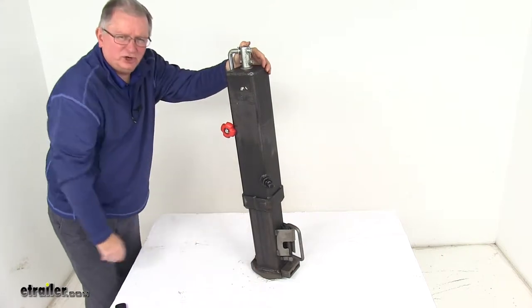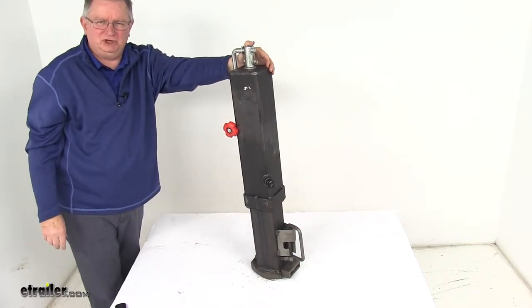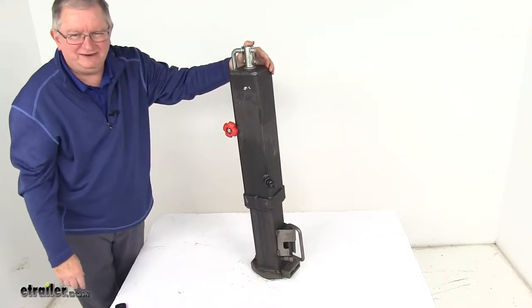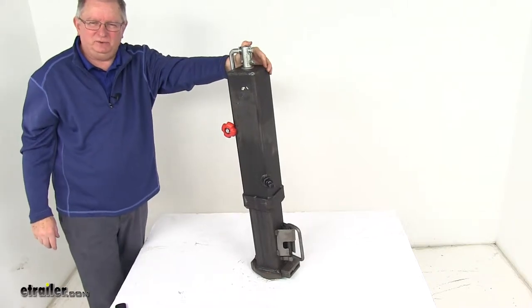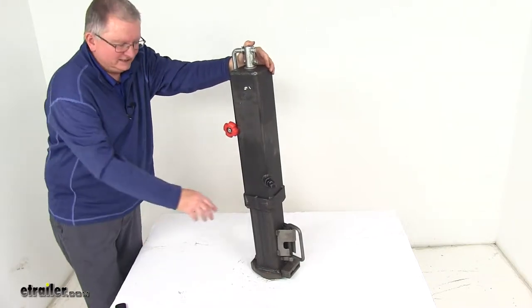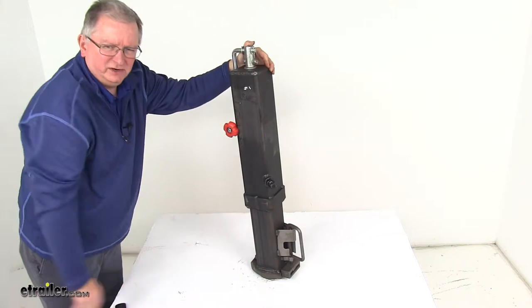When you hook up, it has a curved internal ball clamp that will secure the hitch ball and provide a nice strong tight fit. The tight ball fit will help to reduce jarring and rattling. It uses a spring-loaded handle right over here for easy hookup.